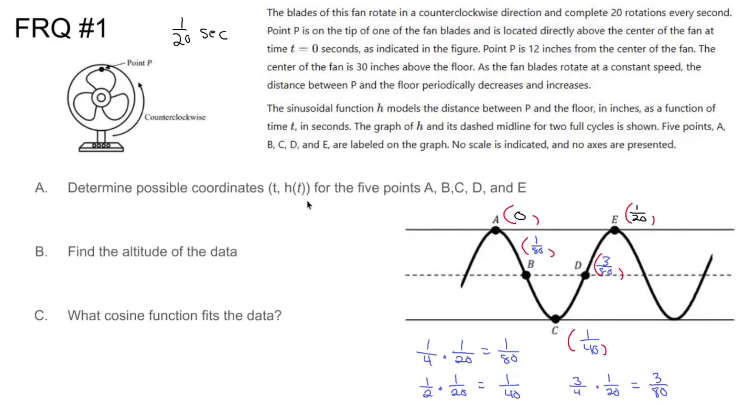So we have our t values. Now to finish these coordinates out, I need the height. I know that the middle is 30 inches off the floor. I also know that the distance between the middle and that point is 12. So the very maximum is going to be 30 plus 12, which is 42. And the very minimum is going to be 30 minus 12, which is 18. So at the very tippy top, we're at 42. At the very middle, we're at 30. At the very bottom, we're at 18. At the very middle, we're at 30 again. And at the very tippy top, we're at 42 again.